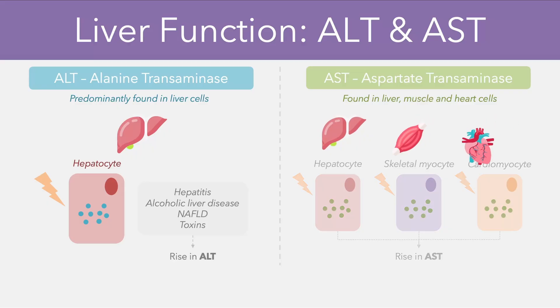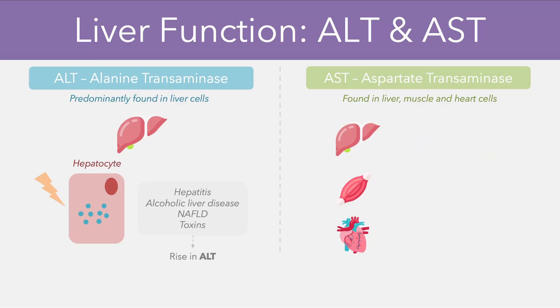In terms of the individual pathologies, damage to the hepatocytes might be caused by the same processes we've already mentioned — hepatitis, alcoholic and non-alcoholic liver diseases. Injury to the musculoskeletal system might be caused by rhabdomyolysis, which is rapid breakdown of muscle, or myositis, which is inflammation of the muscle. In regards to cardiac pathology, there might be myocardial infarctions or heart failure processes which damage the cardiomyocytes.